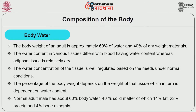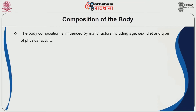A normal adult male has about 60% body water and 40% solid matter, of which 14% is fat, 22% protein and 4% bone minerals. The body composition is influenced by many factors including age, sex, diet and type of physical activity.